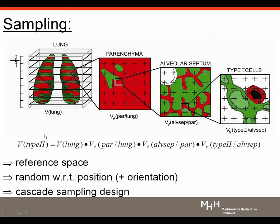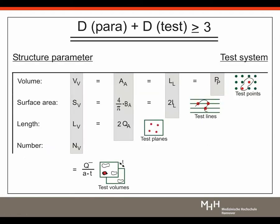Samples must be randomized so that each part of the lung has the same chance of being selected for analysis. We need to apply unbiased sampling principles with respect to the randomization of sample position within the lung. At the microscope, we must think about the appropriate test system or geometric probe to use, and that depends on the parameter we want to estimate.